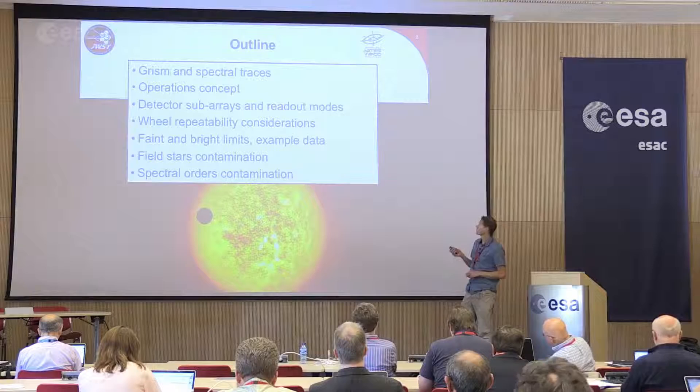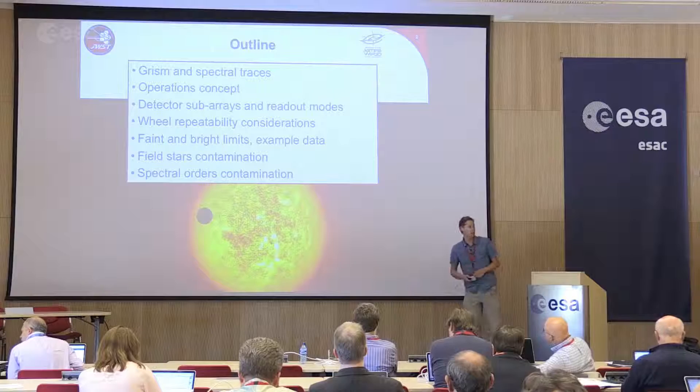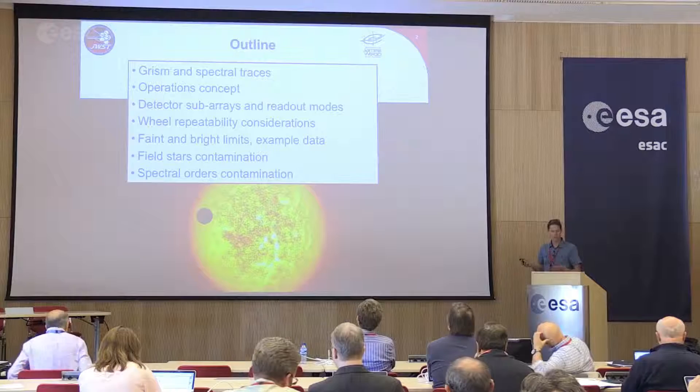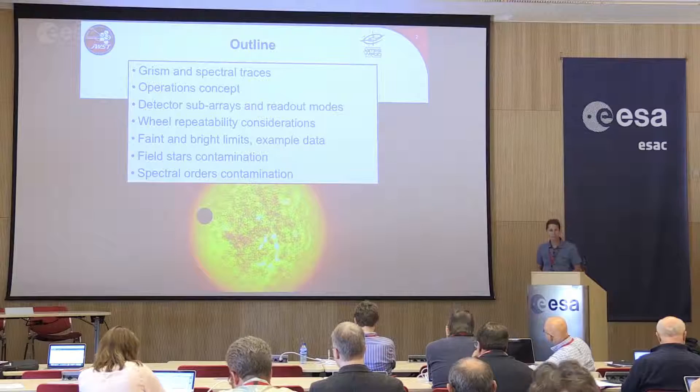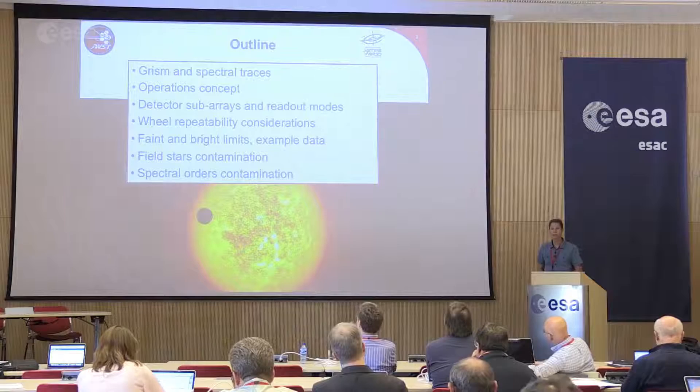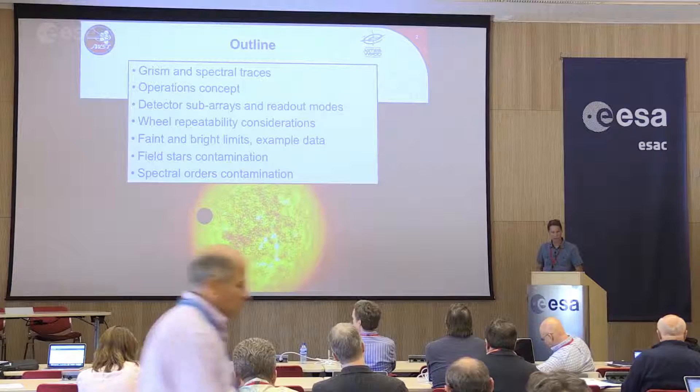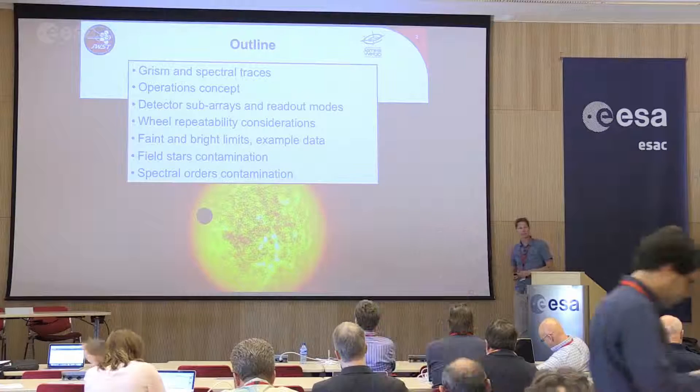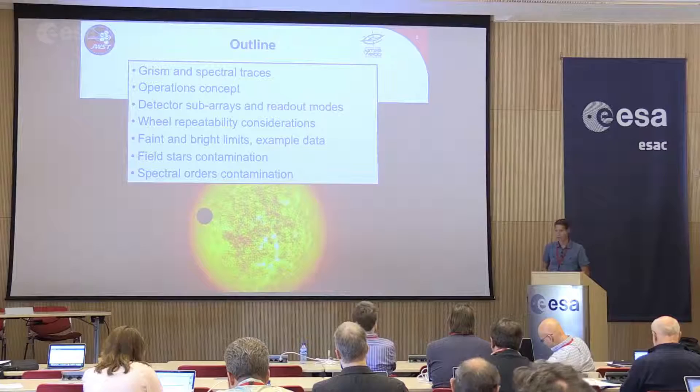I'm going to talk about a few of the specifics of NIRISS here: start off with the grisms, the spectral trace, the operations concept, the detector sub-arrays and readout modes as options similar to what Stefan was just talking about, the wheel repeatability, the faint and the bright limits — saturation for example, and how faint you can go with the host stars — and show you some example data, and then talk about field star contamination because we're in a slitless mode, and then spectral orders contamination.